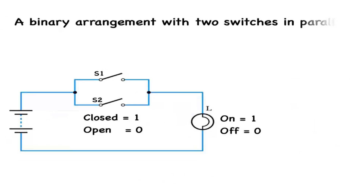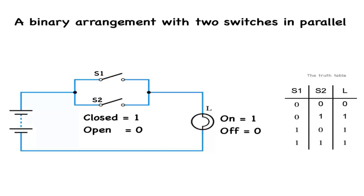Here is another binary arrangement with two switches in parallel, which generates the truth table. The two switches form what is known in logic gate terms as an OR gate. We state it logically in the equation: L equals S1 OR S2.